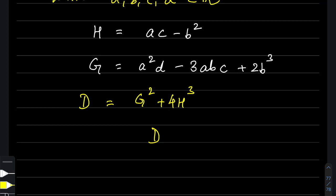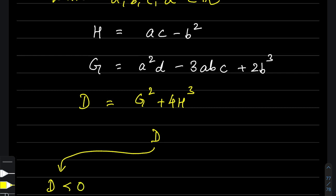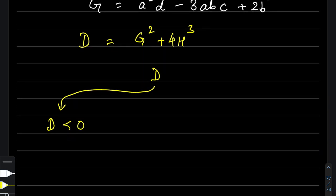Let's see how the discriminant D decides which scenario holds. If the discriminant D is less than zero, the cubic equation will have three real and distinct roots — all real, and no two roots will be the same.